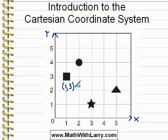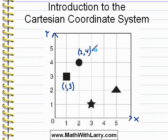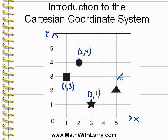Let's find the coordinates of the circle point. It's two to the right and four up, so we write two comma four. The star is three to the right and one up. And the triangle is five to the right and two up. Make sure that you feel very comfortable identifying points in this fashion.